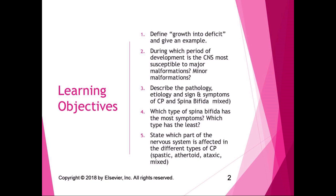I want you to know during which period of development the central nervous system is most susceptible to major and minor malformations. I want you to be able to describe the pathology, etiology, signs and symptoms of cerebral palsy and spina bifida, and which type of spina bifida has the most symptoms and which has the least. For cerebral palsy, I want you to be able to state which part of the nervous system is affected in different types: spastic, athetoid, ataxic, and mixed.